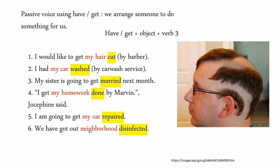Example number four: I get my homework done by Marvin — Josephine said, 'Marvin, what game did you lose?' Example number five: I'm going to get my car repaired. It is not done by you, but by a professional mechanic. You get the mechanic to fix your car.